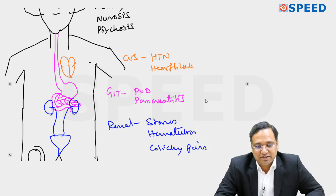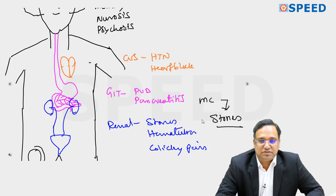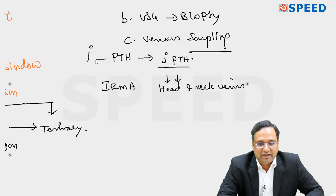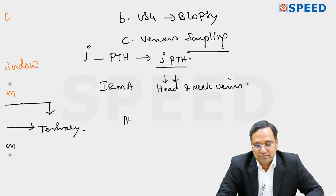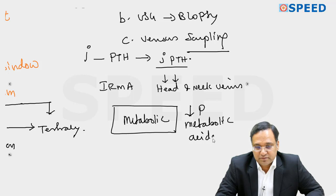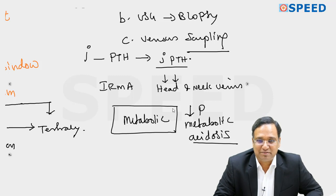Among all the complications, the most common is renal stones. The classic mnemonic is: stones, bones, abdominal groans, and psychic moans. The metabolic effect in patients with hyperparathyroidism is hypophosphatemic metabolic acidosis — this is the metabolic abnormality the patient will have.